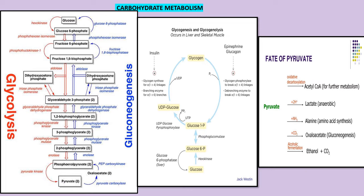The rate-limiting steps in glycolysis are important to know. First, glucose is converted to glucose-6-phosphate by hexokinase (or glucokinase in the liver). Second, fructose-6-phosphate is converted to fructose-1,6-bisphosphate by PFK-1, which is the most important rate-limiting enzyme of glycolysis, consuming one ATP. Third, phosphoenolpyruvate is converted to pyruvate by pyruvate kinase, generating ATP.